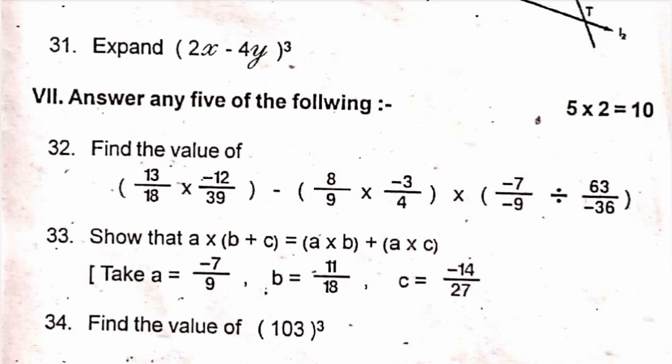So, 33, a into b plus c is given. a value is given as minus 7 by 9, b value is 11 by 18, c value is minus 14 by 27. 34th question, find the value of 103 the whole cube.